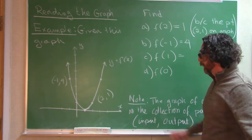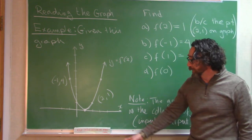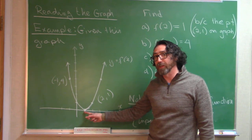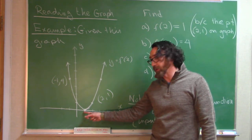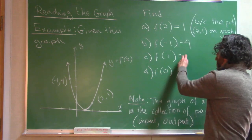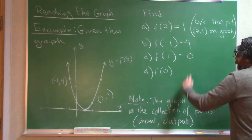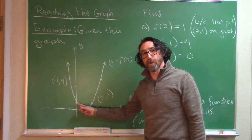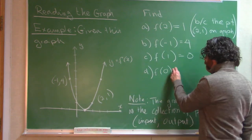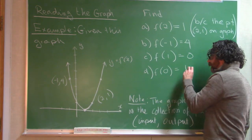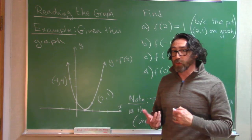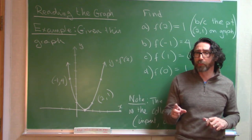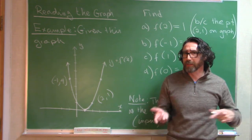We can also evaluate f of 1 — we look on the graph for a point that has 1 as the x-coordinate. 1 comma 0 is on the graph, so f of 1 equals 0. And f of 0 — 0 comma 1 is on the graph, so f of 0 equals 1. These graphs of functions are extraordinarily useful tools for dealing with functions.